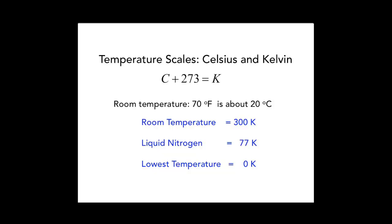Temperature scales: usually we talk about Fahrenheit. Today it's about 70 degrees Fahrenheit, which is about 20 degrees Celsius. We like to use the Kelvin scale, given by taking the centigrade plus 273. Zero degrees centigrade — where water freezes — is 273 Kelvin. The lowest number on the Kelvin scale is zero Kelvin, which is absolute zero. I want you to keep three numbers in mind: zero Kelvin as our reference, 77 Kelvin which is liquid nitrogen, and room temperature which is about 300 Kelvin.